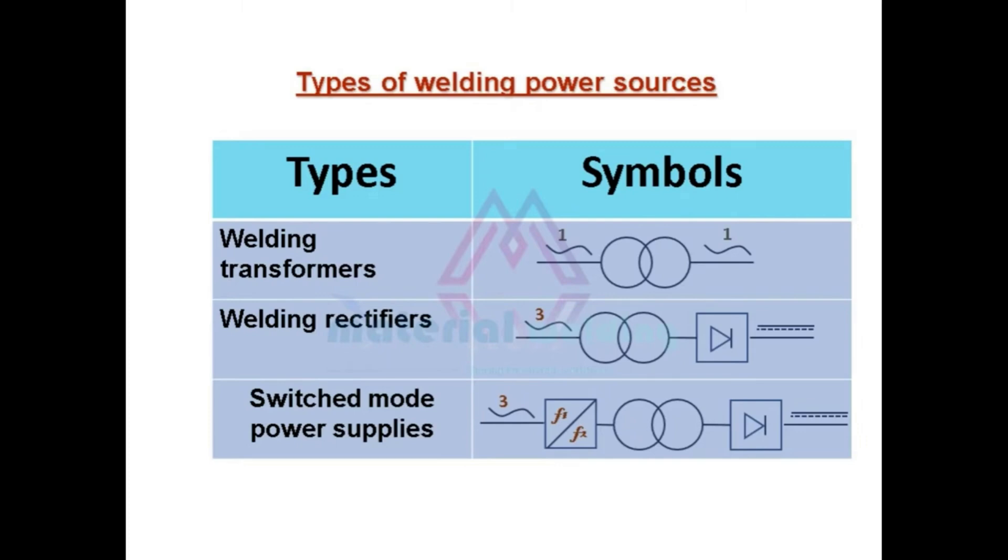The table here shows the three main types of welding power sources. The first one is welding transformer, second is welding rectifier, and third one is switched mode power supply type. If you find the video useful, do like, share, and subscribe.